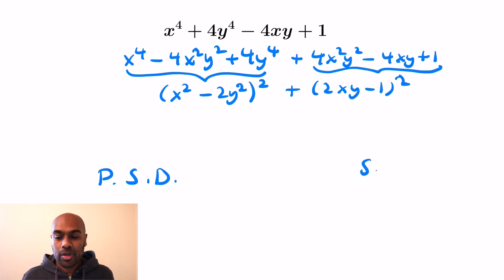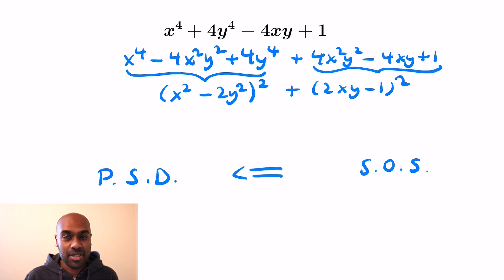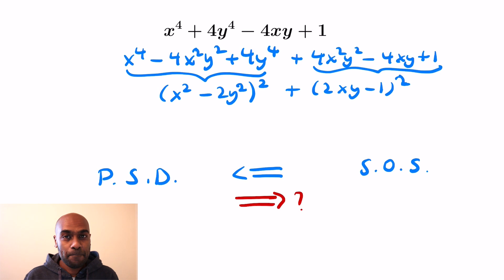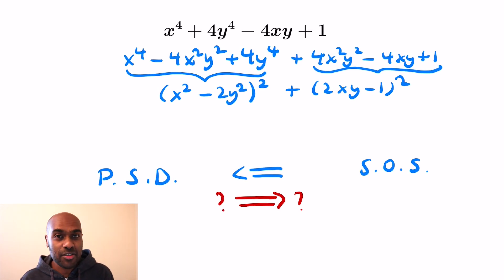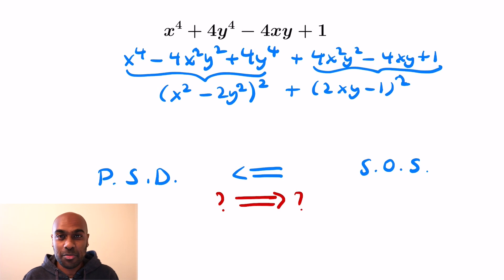This expression happened to be a sum of squares, and if we saw that first, that would have guaranteed it is positive semi-definite because the sum of squares is always non-negative. But are all positive semi-definite things forced to be sums of squares? That's the question we're going to ask today — we'll look at different situations where being non-negative as a polynomial actually forces you to be a sum of squares of polynomials.